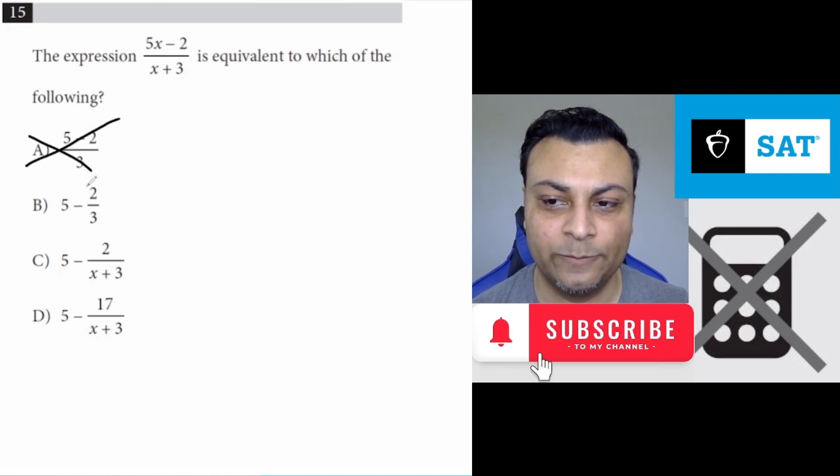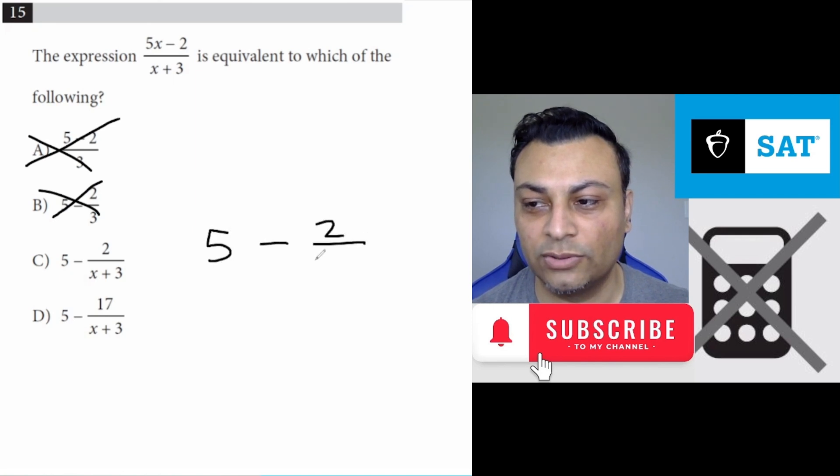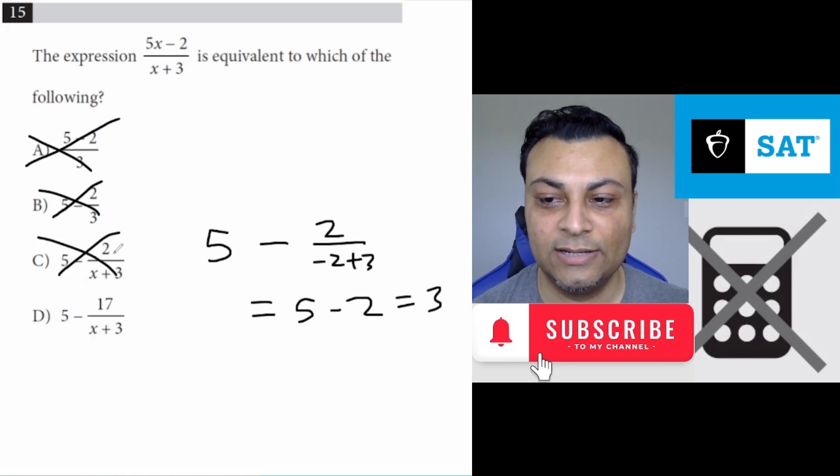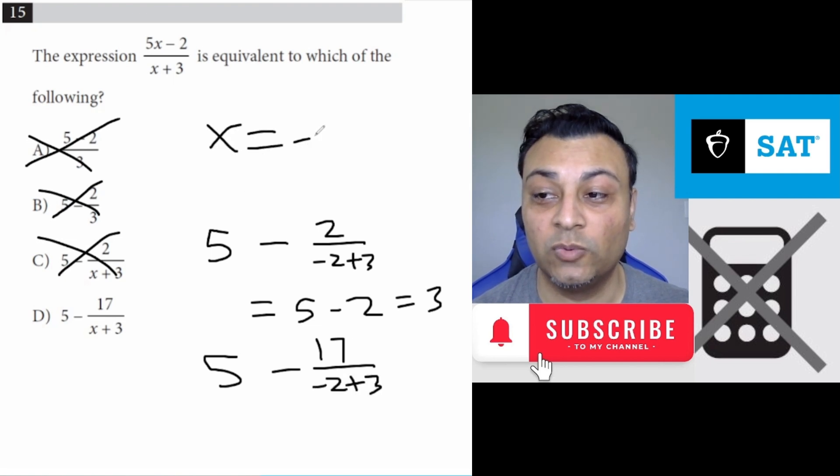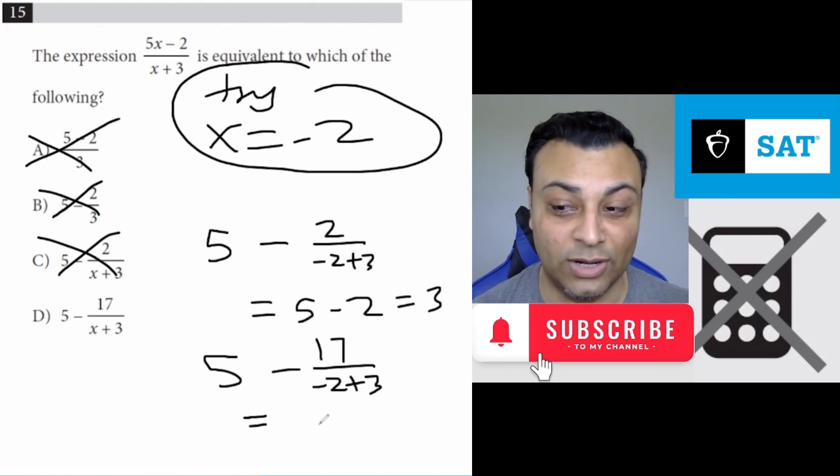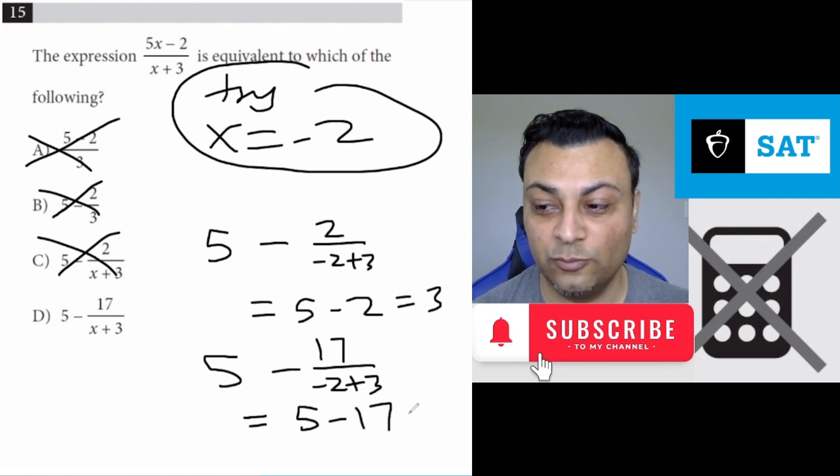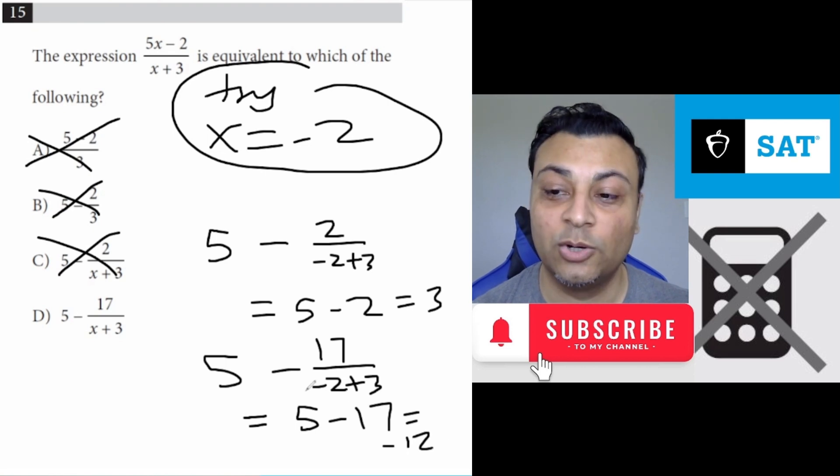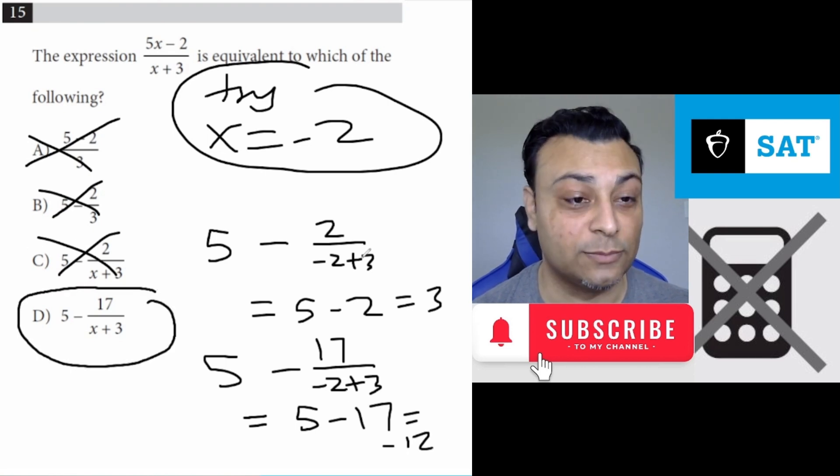And if you plug negative 2 into here, you get 5 minus 2 over, I mean, we can see that this denominator is going to go to 1. So this is 5 minus 2, which is 3. So that's not it. And for D, you would get 5 minus 17 over negative 2 plus 3. Remember, we're plugging in negative 2 for our test number. This ends up being, this is a 1, so you have 5 minus 17, which is indeed negative 12, which is what we were shooting for. So the answer is option D using this method.